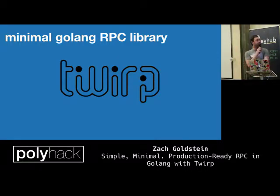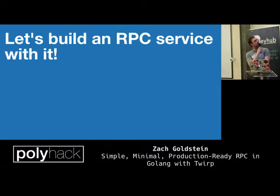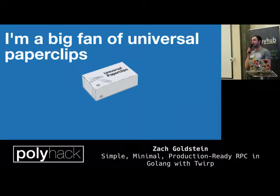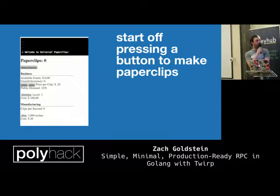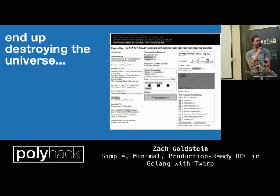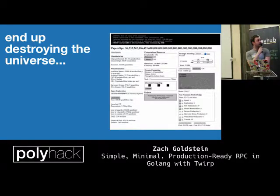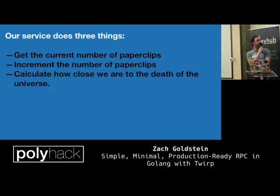We're going to build an RPC service with Twirp. The example is based on Universal Paperclips — a fun game where you start pressing a button to make paperclips and end up destroying the universe somehow. It's a cautionary tale about naive AI. Our service is going to do three things: get the current number of paperclips, increment the number of paperclips, and calculate how close we are to the death of the universe.